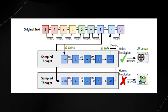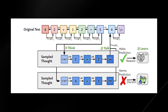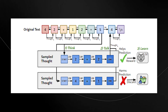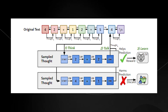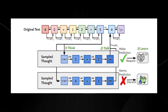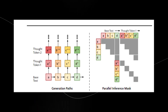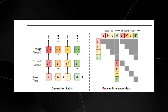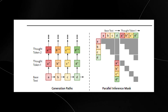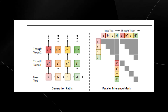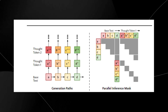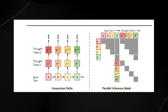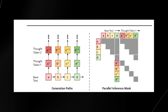This process allows the model to incrementally learn to generate reasoning that improves its language understanding and generation without explicit supervision. The researchers used key techniques to make this computationally efficient and stable, such as parallelizing the thought generation and using special tokens to control the reasoning process.